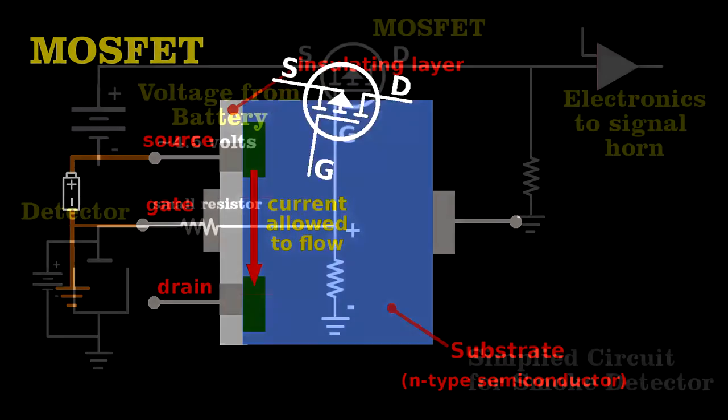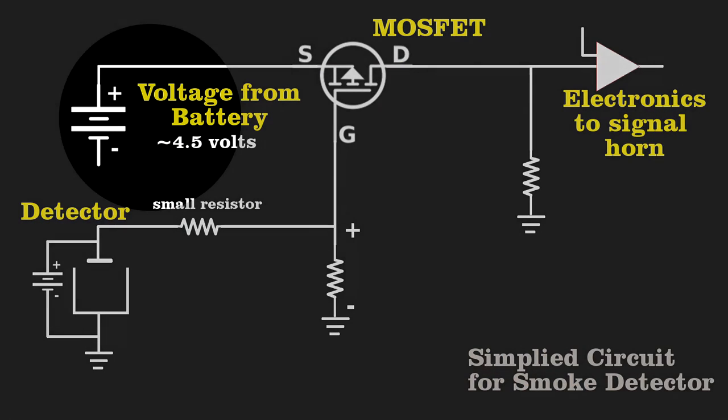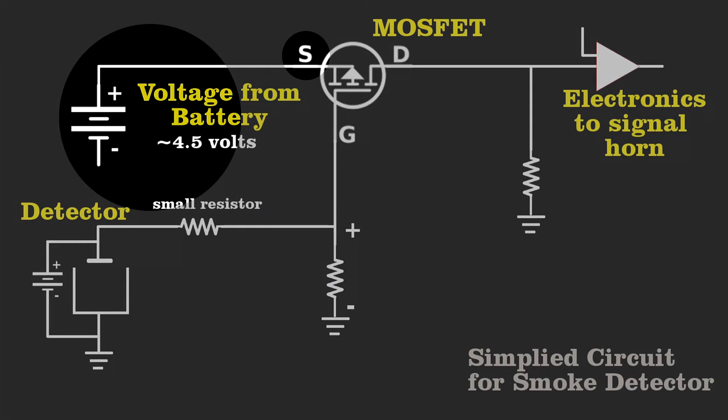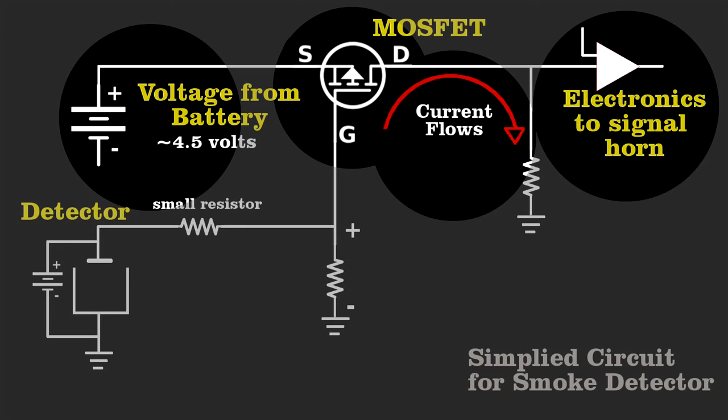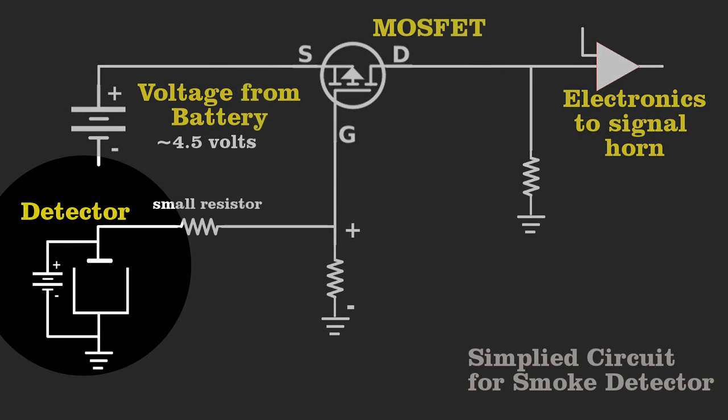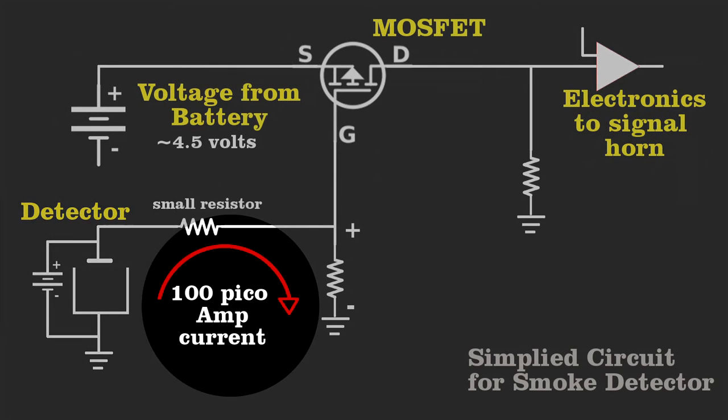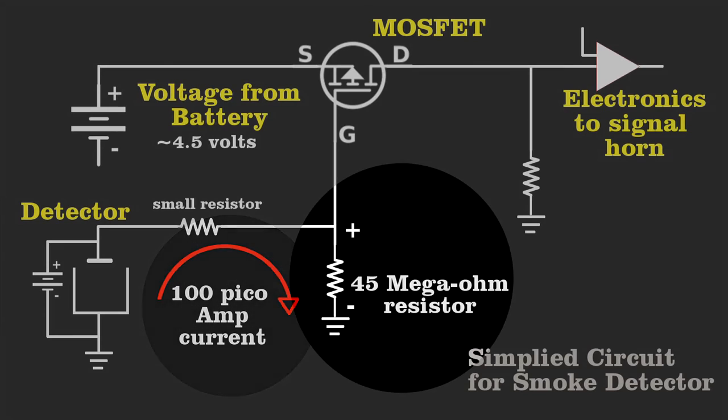In a circuit, we use the 9-volt battery to generate a potential difference between the source and the gate. It biases the gate so that the current flows through the MOSFET, thus turning on the horn. So we counter that with a current flowing from the detector. Here is where the ionized gas creates the tiny current between the two electrodes I showed you earlier. That current passes through a large resistor and creates a voltage that opposes the battery, and it shuts down current flow through the MOSFET.